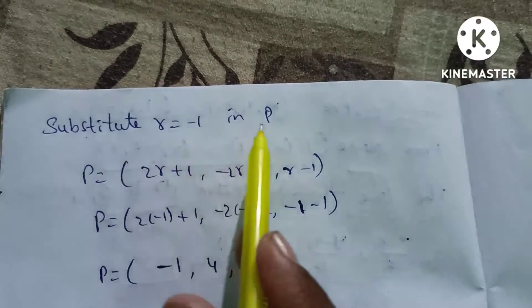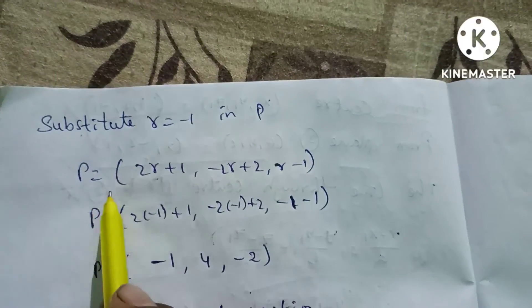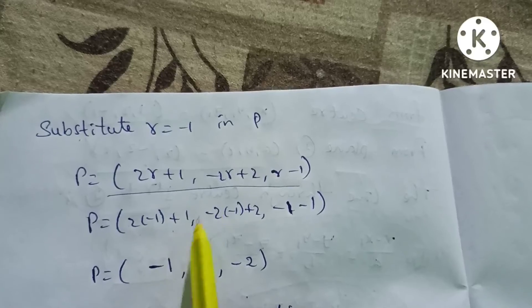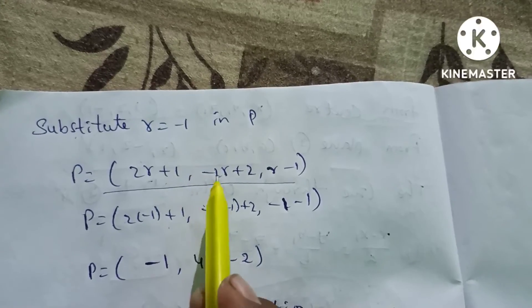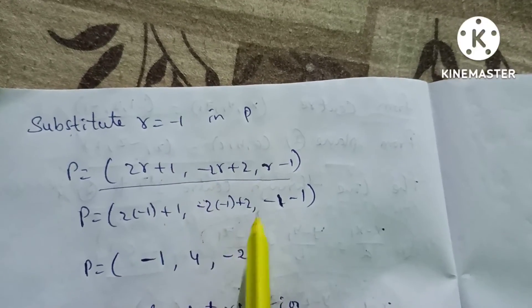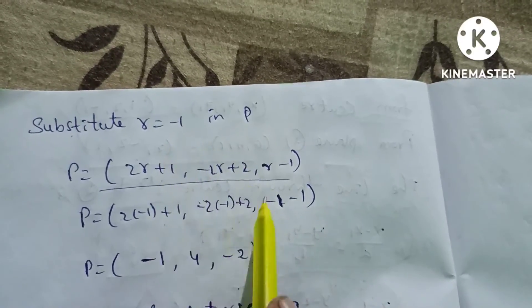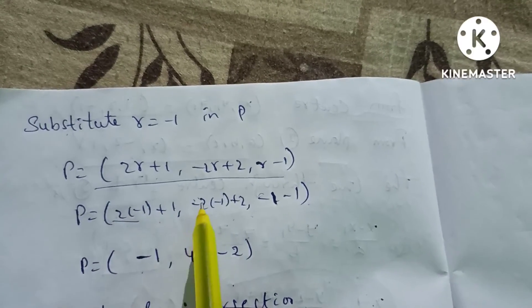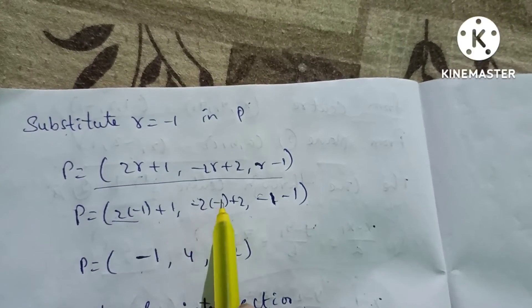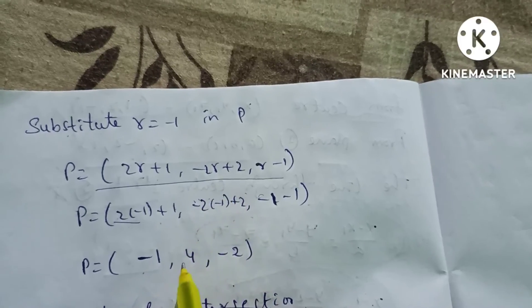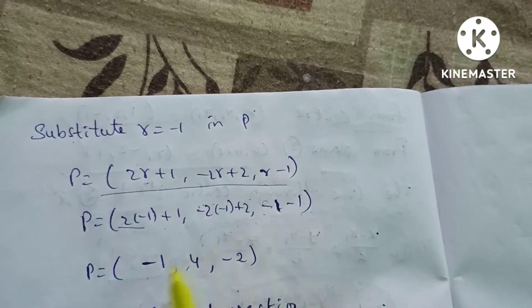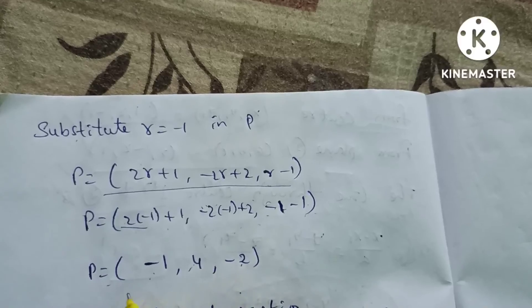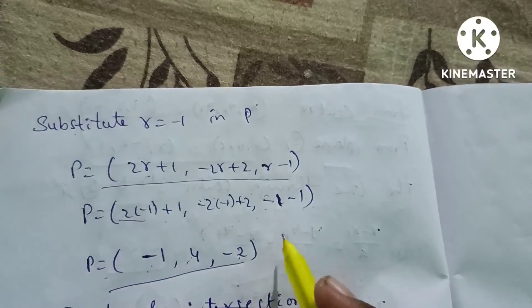Substitute r equal to minus 1 into point P: x equals 2(minus 1) plus 1 equals minus 1, y equals minus 2(minus 1) plus 2 equals 4, z equals (minus 1) minus 1 equals minus 2. So the point of contact is (minus 1, 4, minus 2).